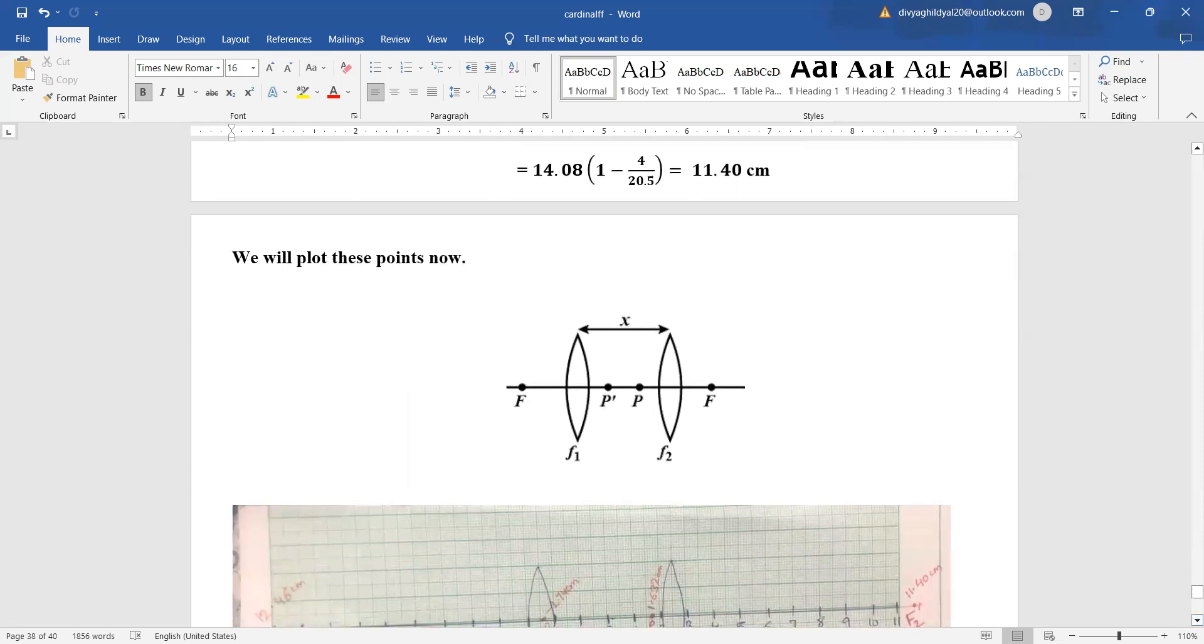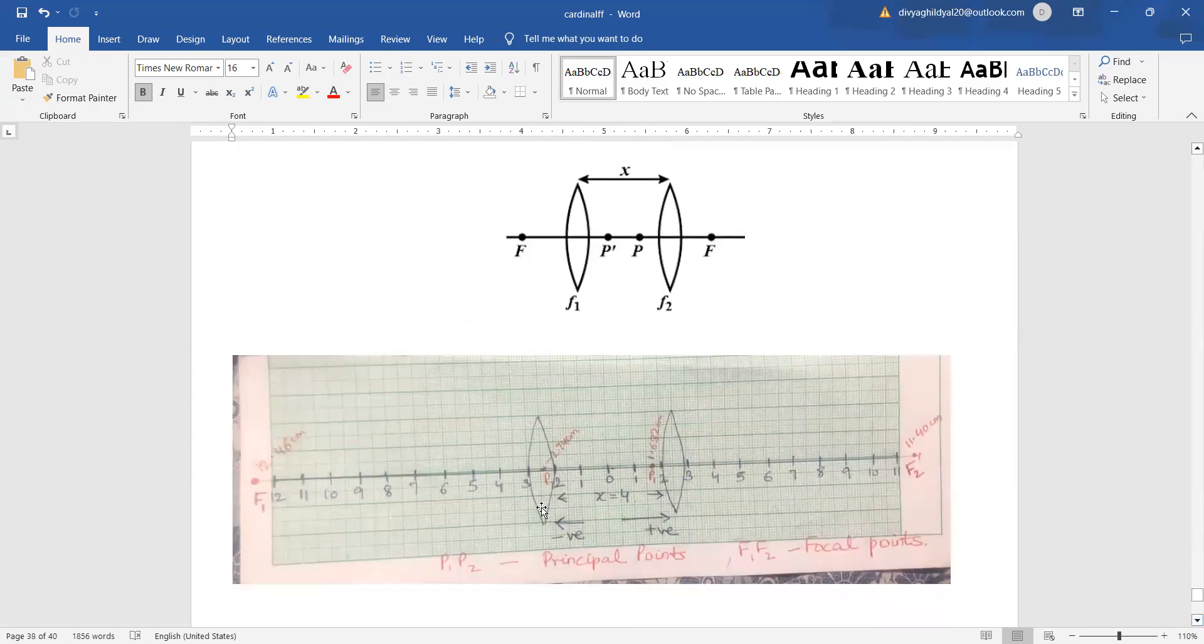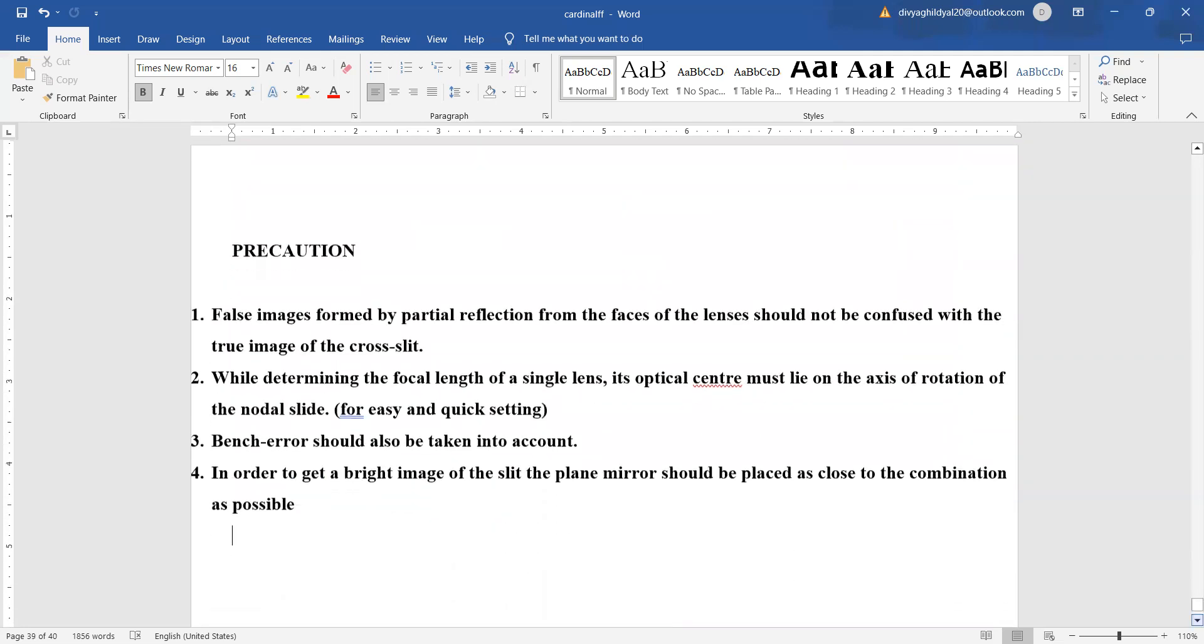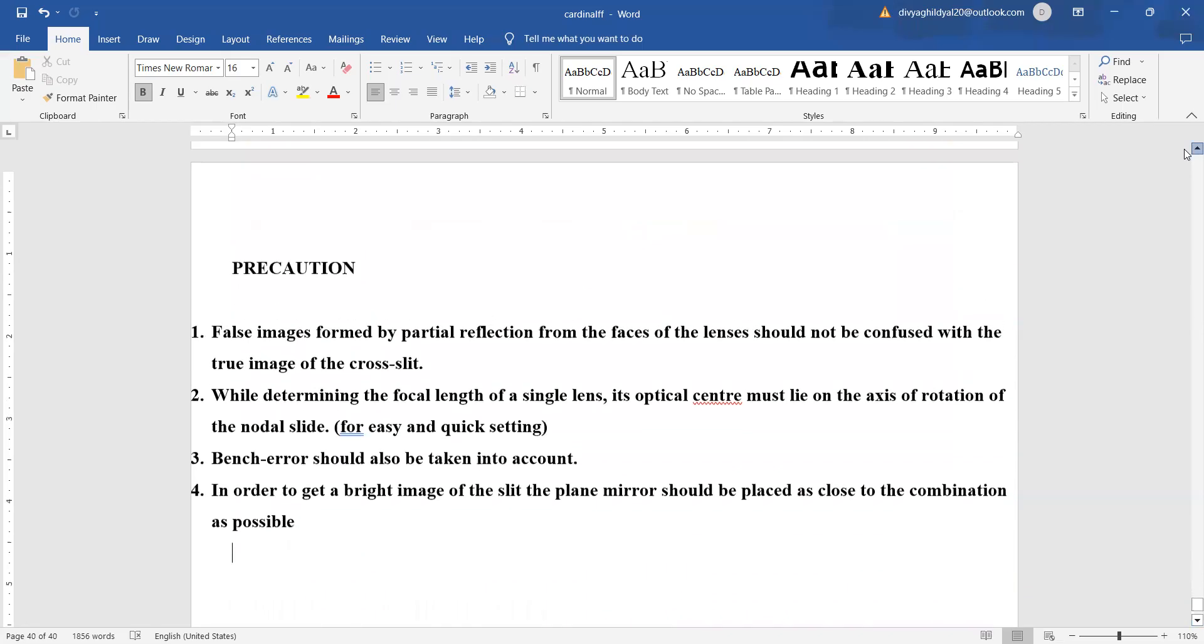Now we will plot these two principal points and two focal points. We can take graph paper and do it for the case where distance between them is 4 cm. We get the first principal point here. The other is negative, we get it here. This side is positive, this side is negative. And the second focal point and the first focal point. This completes our experiment where we have verified the combined focal length through formula and plotted the cardinal points.